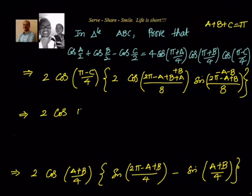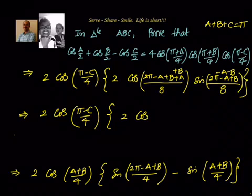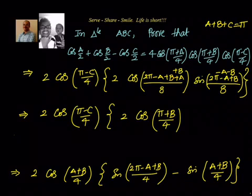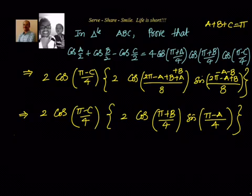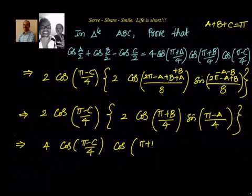In the next step, we apply the sin C − sin D transformation: 2 cos((C+D)/2) · sin((C−D)/2). That gives 2 cos((A+B)/4) · 2 cos((π−C)/4) · cos((π+B)/4), where A+B = π−C from the angle sum property. When we add the arguments, the A terms cancel giving cos((π+B)/4), and when we subtract, the B terms cancel giving sin((π−A)/4).